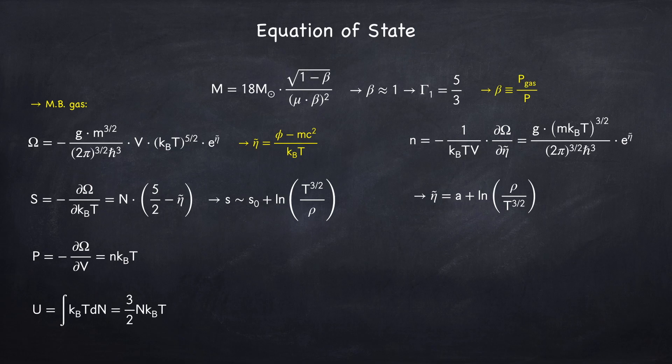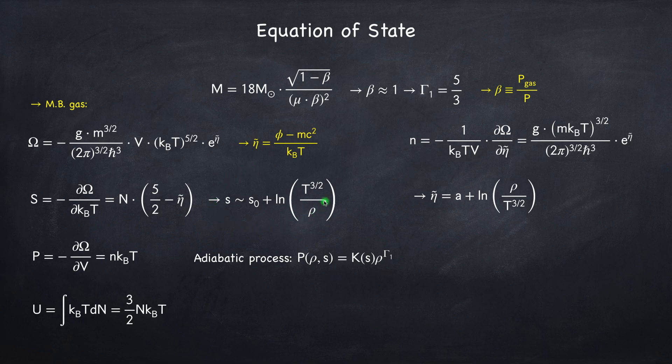For an adiabatic process, the pressure, which is a function of density and entropy, will equal some function of entropy times rho raised to the adiabatic index. In order to find what k of s is, I can solve this equation for the temperature, and then plug that into the pressure, which will give that k of s is proportional to e raised to some number times the entropy.